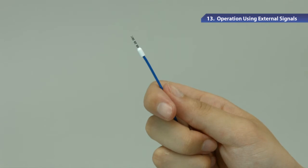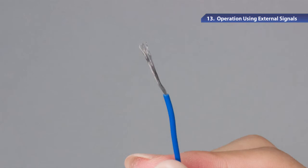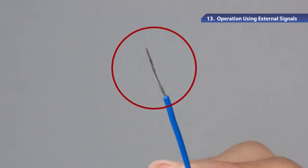For the control circuit wiring, blade terminals are recommended. If you want to use the stripped electric wires, twist the electric wires before wiring so they won't become loose.